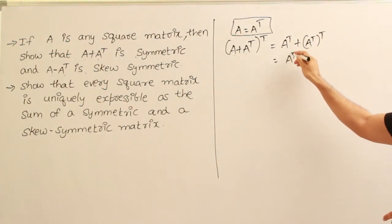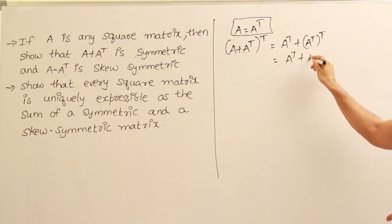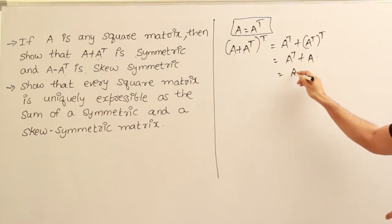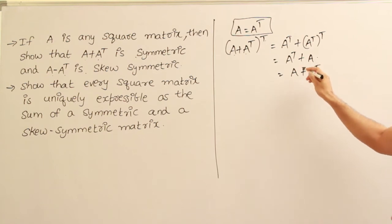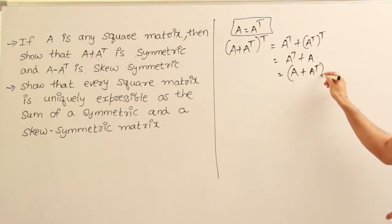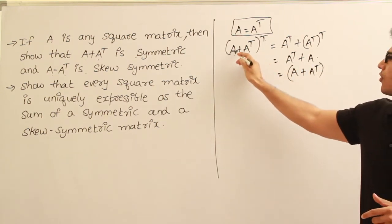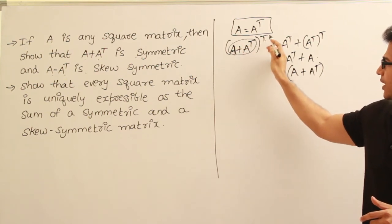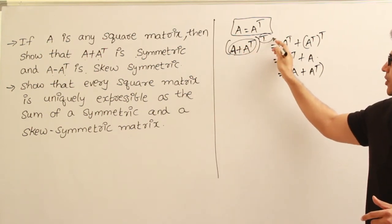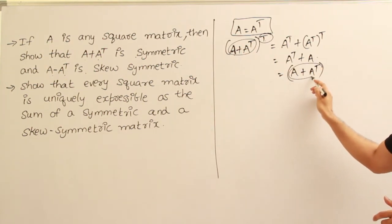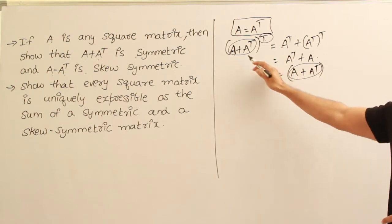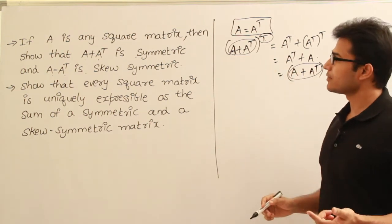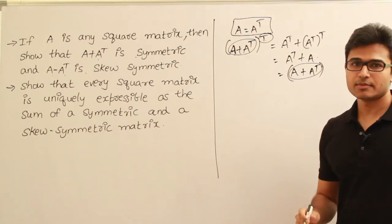That gives us A transpose plus A, which we can write as A plus A transpose. We have taken a matrix, found its transpose, and got the same matrix back. Therefore, we can say the original matrix is symmetric — which means A plus A transpose is symmetric.